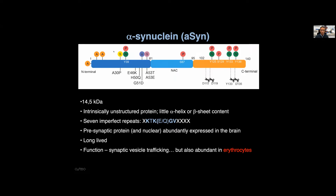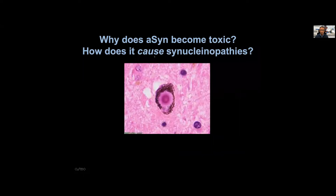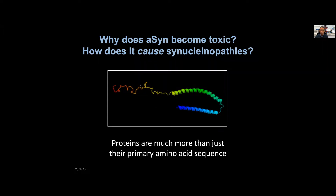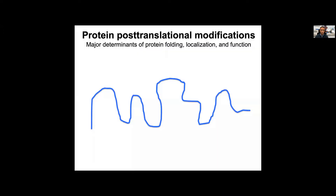We also have some ideas about possible post-translational modifications that the protein undergoes. This is important, because if we want to understand why this protein becomes toxic and how it causes disease and accumulates in Lewy bodies, we need to think that proteins are not just the primary sequence we know from the gene. All proteins undergo post-translational modifications that determine the folding, the localization, and the function of proteins.